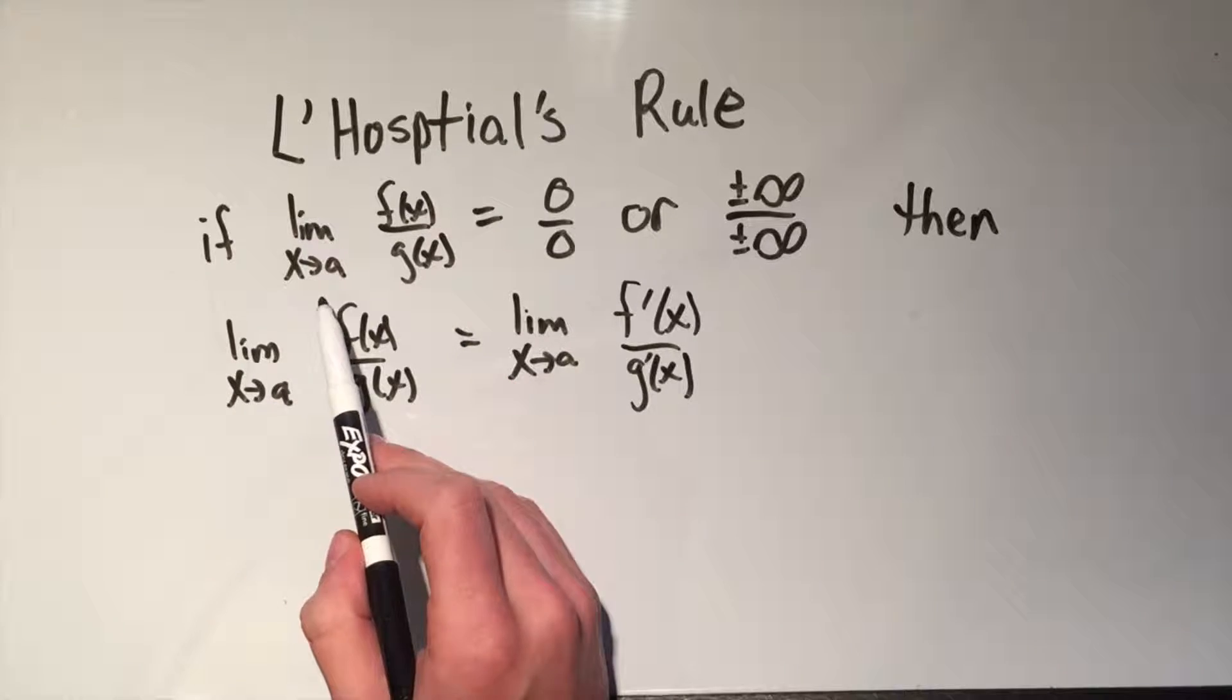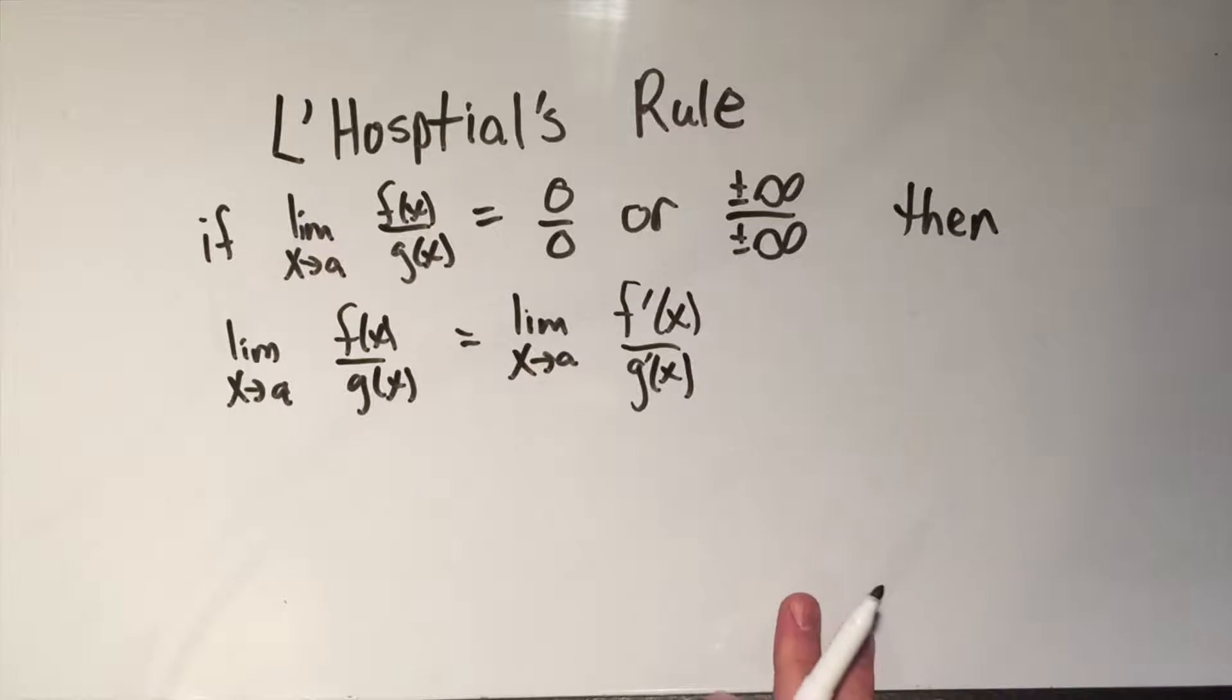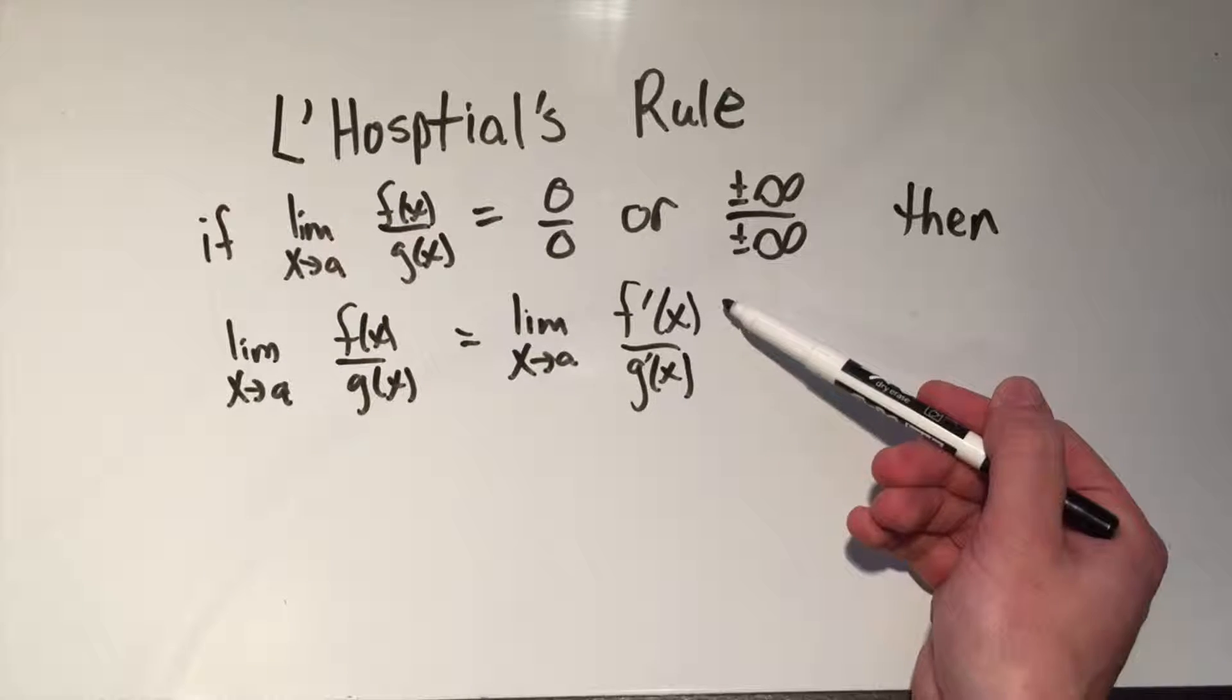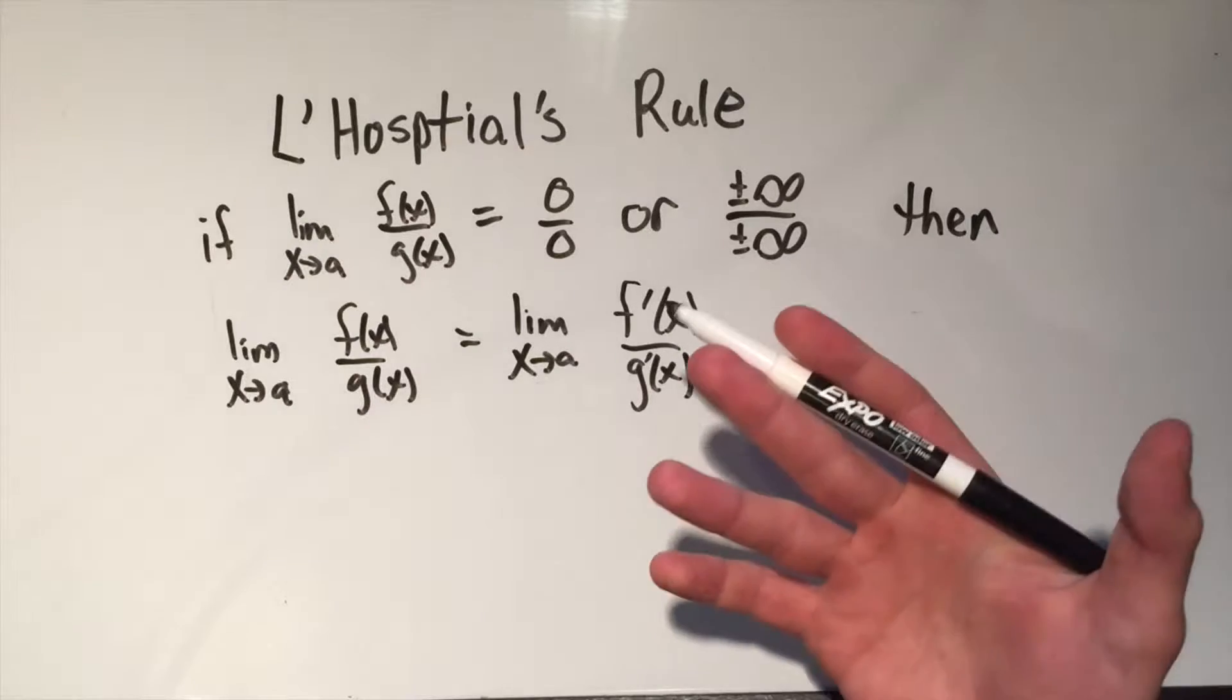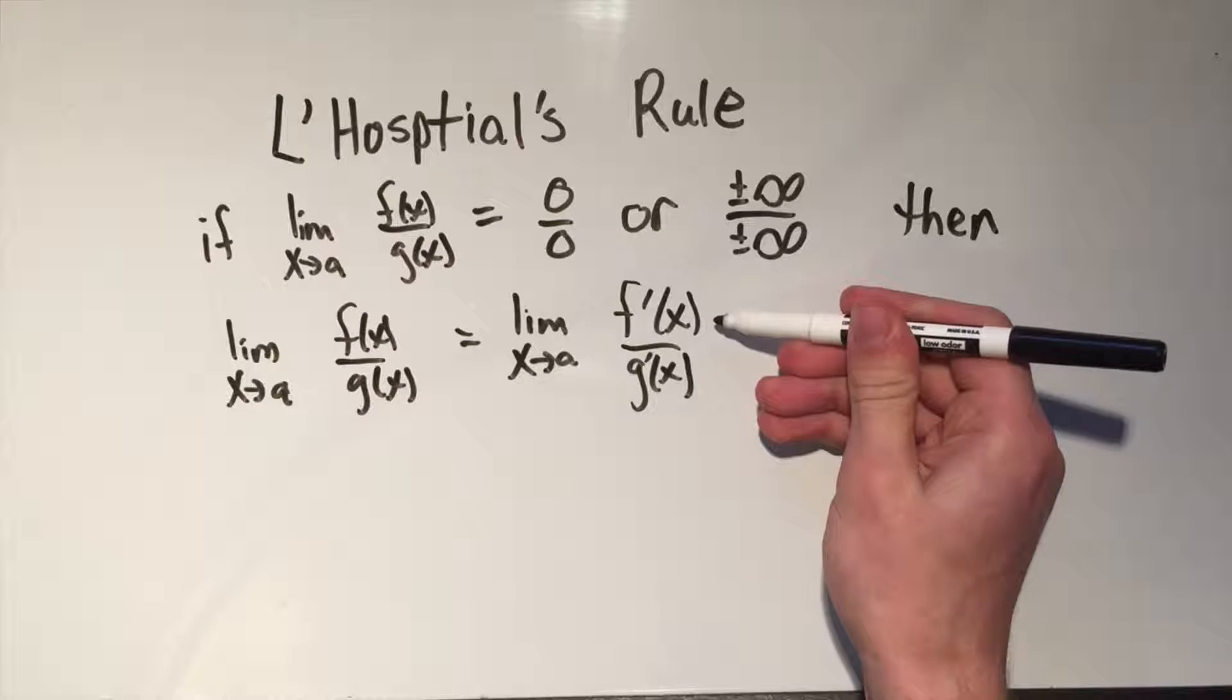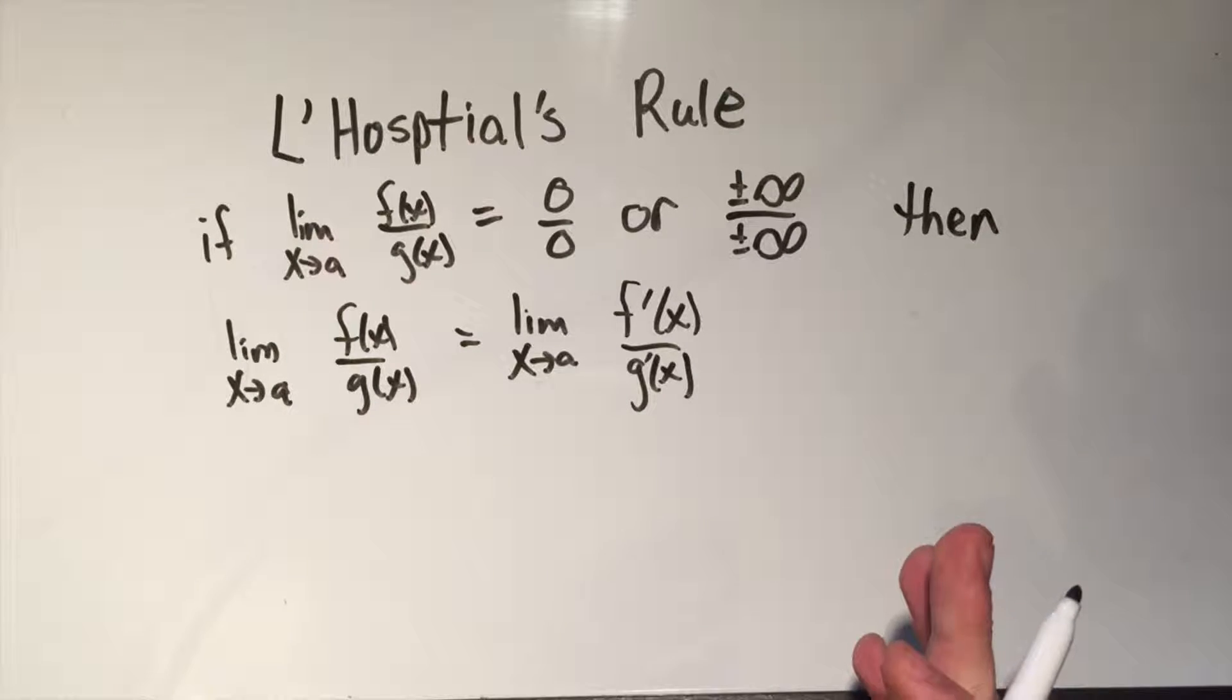So if you have a limit of a rational function, a function over a function, and you get 0 over 0, or plus or minus infinity over plus or minus infinity, then you can do the same limit except you can take the derivative of the numerator over the derivative of the denominator and try the limit again. It's not a quotient rule, don't do the quotient rule. You take the derivative of the top separately from the derivative of the numerator. So this is great news because you were always getting 0 over 0, that was the problem before.